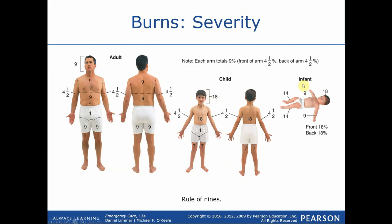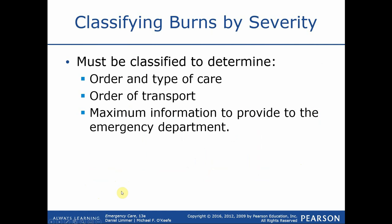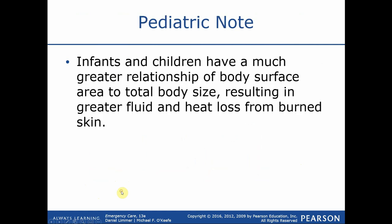Infants are the same as children — the entire head is 18%, the arm is 9% (four and a half front, four and a half back), and the legs are grouped together as 14% each. Generally speaking, the rule of nines is very similar between adults and children — the only differences are the size of the head and the size of the legs. I would strongly recommend that for quizzes and exams, you at least have the adult rule of nines memorized and can calculate it.